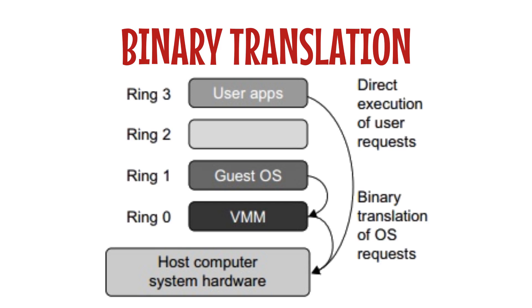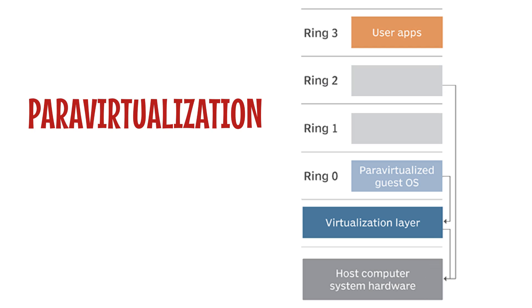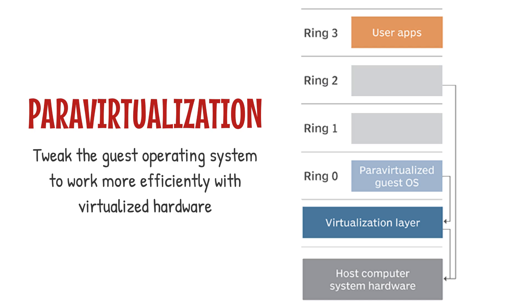Now let's break it down. Binary translation works at a very low level, intercepting and translating instructions between your app and the virtual machine it's running on. Why does this matter? Because legacy apps often rely on direct hardware instructions that virtualized environments can't handle natively. That's where the translator steps in, making sure your app gets what it needs to run smoothly. Take VMware — they've pioneered something called para-virtualization, a way of tweaking the guest operating system to work more efficiently with virtualized hardware. But not all apps can be modified. In those cases, binary translation saves the day, acting as the middleman and making sure everything flows seamlessly.